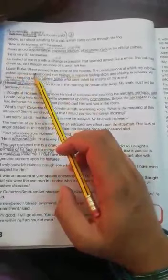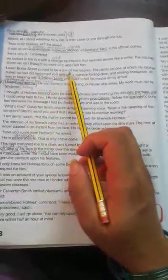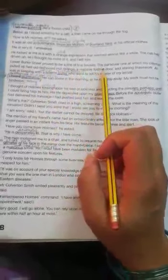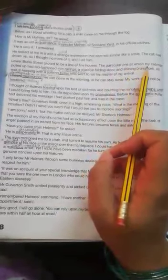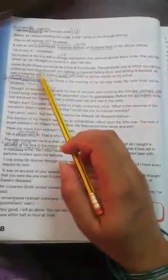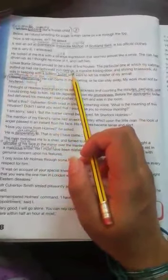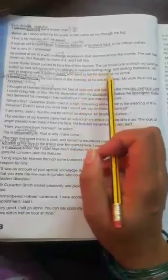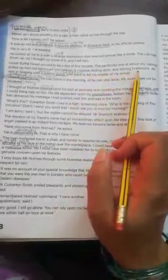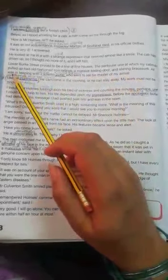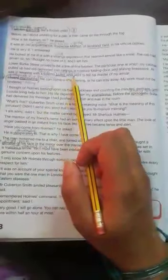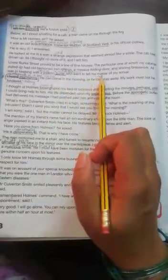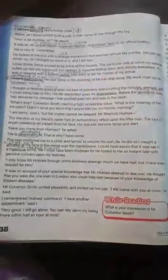Lower Bourke Street proved to be a line of fine houses. The particular one at which my cabman pulled up had old-fashioned iron railings, a massive folding door, and shining brass work. All was in keeping with the solemn butler who went to tell his master of my arrival.